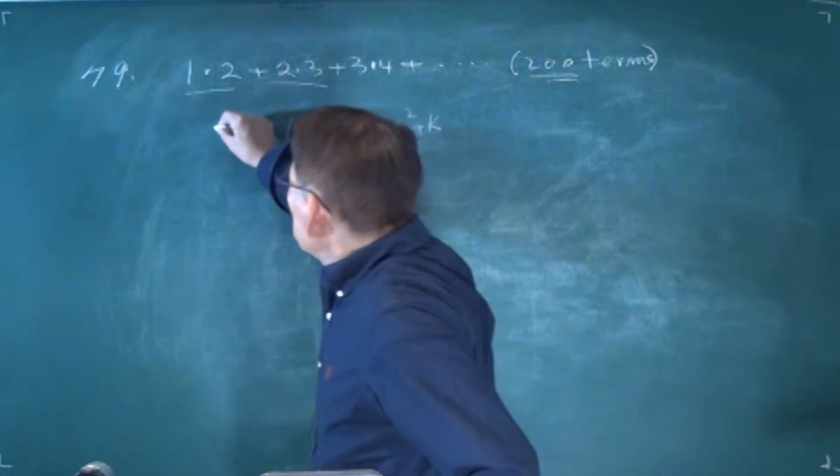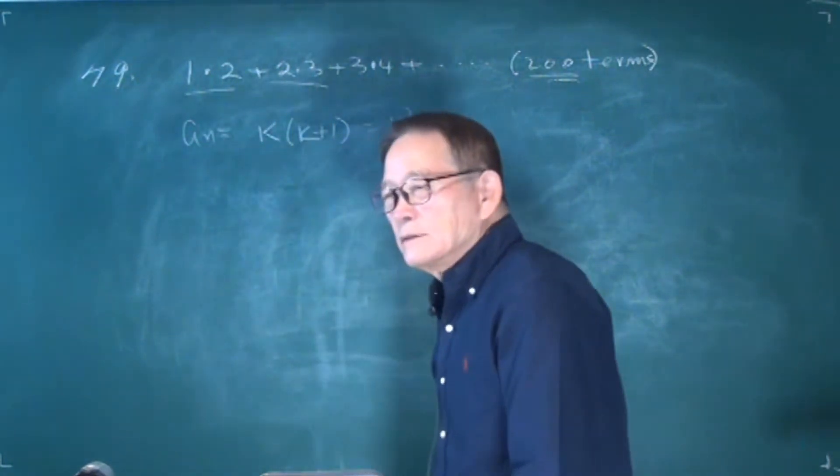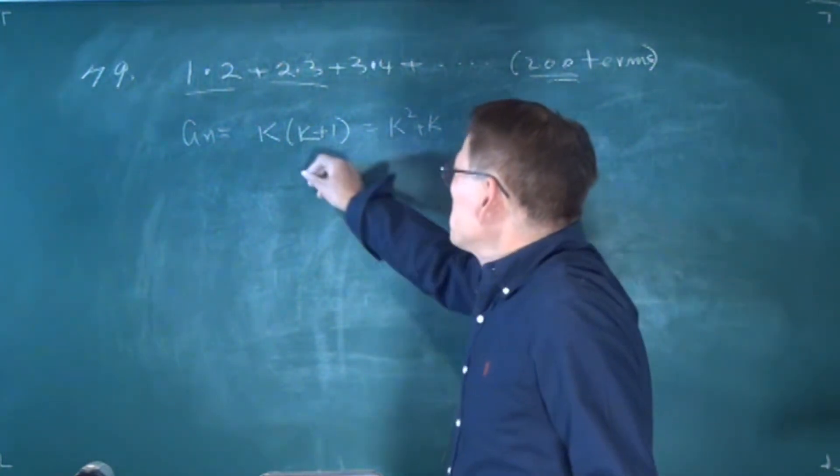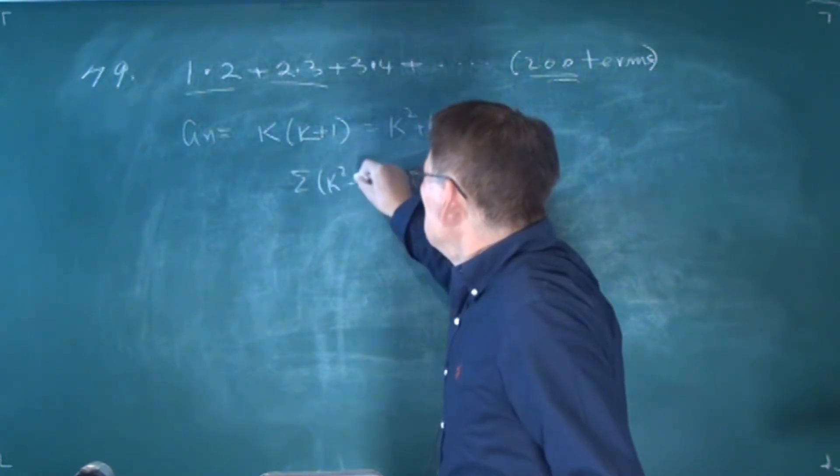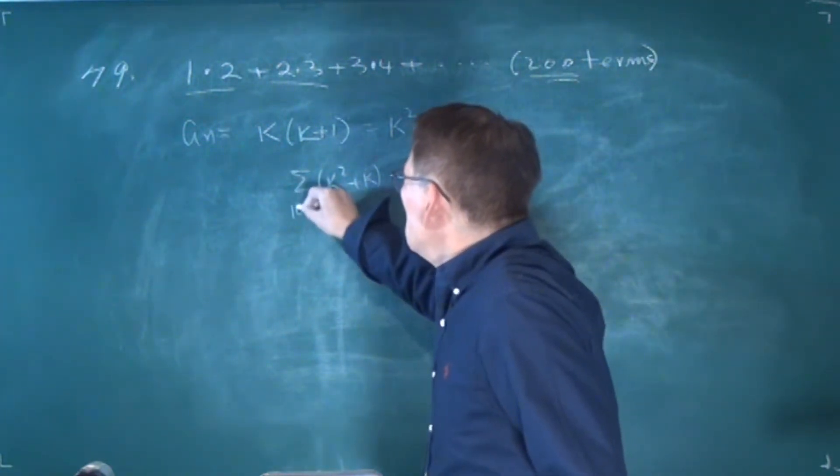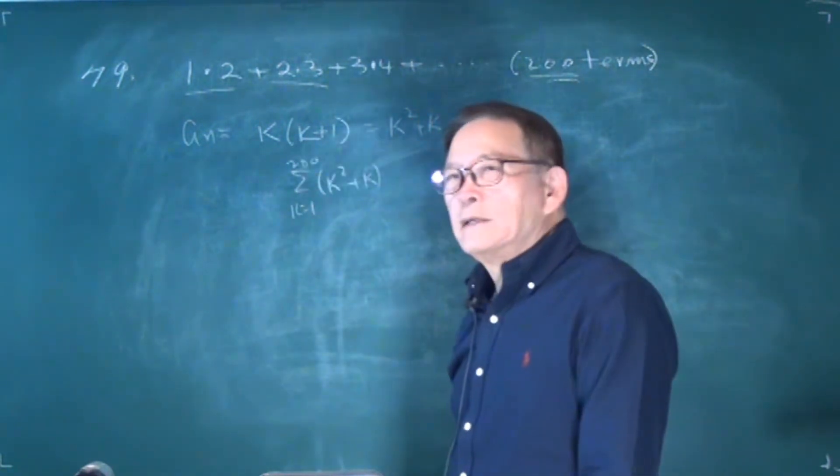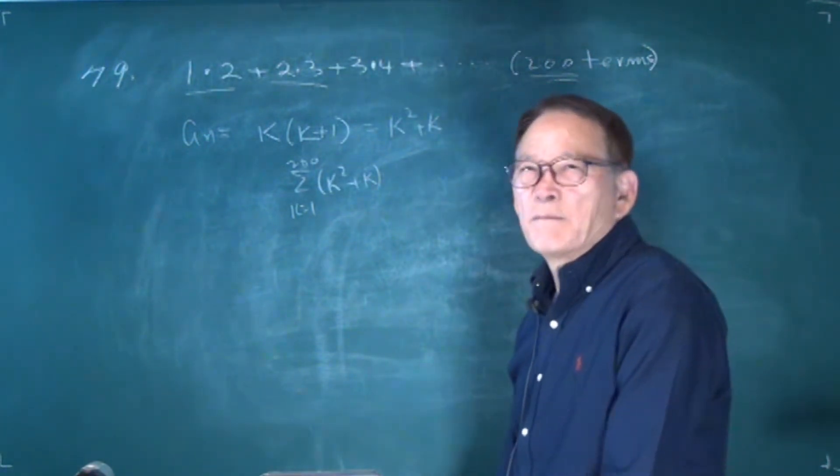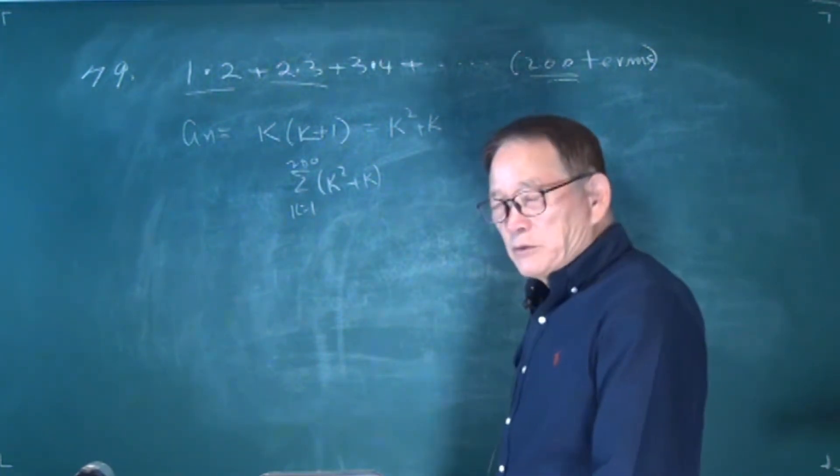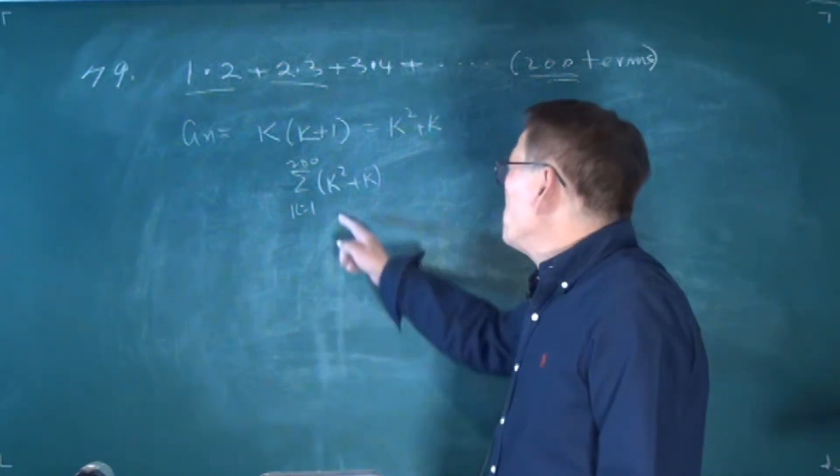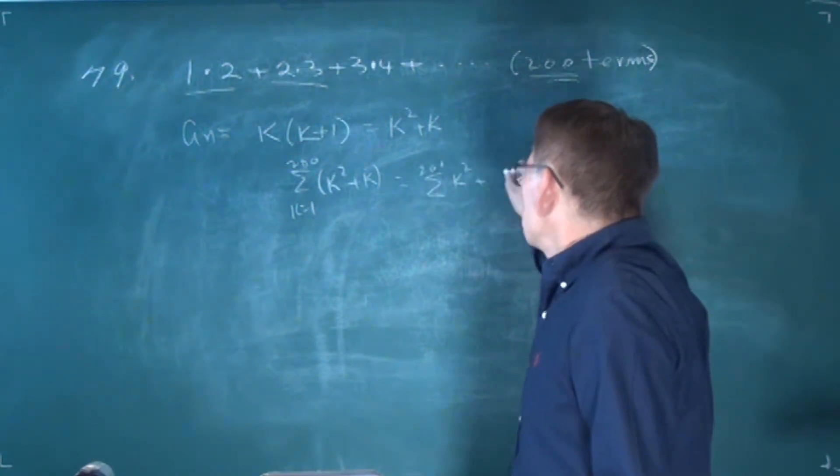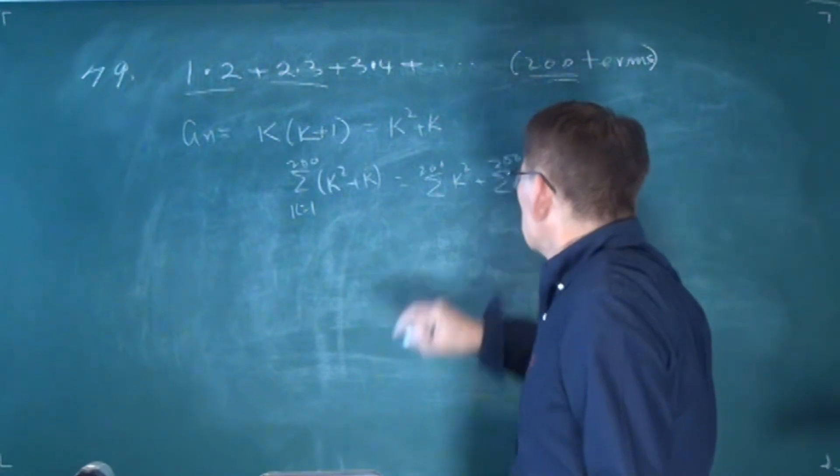When we multiply this out, k times k plus 1 equals k squared plus k. Once we find the general term, we put sigma in front of it. The sum becomes sigma from k equals 1 to 200 of k squared plus k. Since we have addition, we can distribute: sigma k squared plus sigma k.